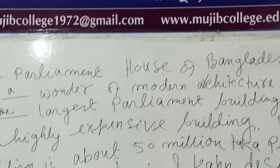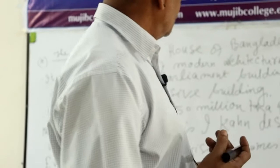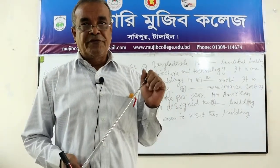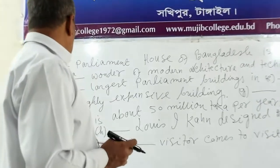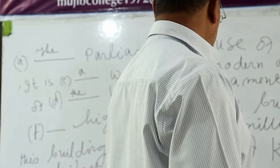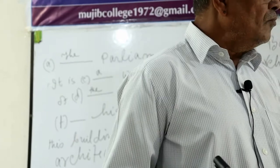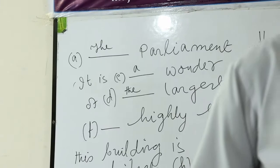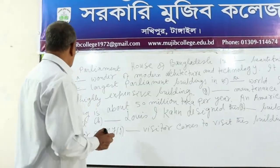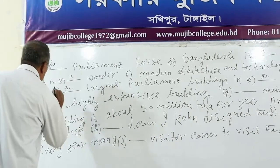It is a highly expensive building. 'Expensive' is an adjective and 'building' is a singular common noun. 'Highly' starts with a consonant, so we will have to use 'a'. Therefore: a highly expensive building.